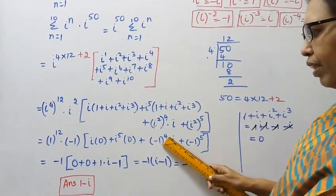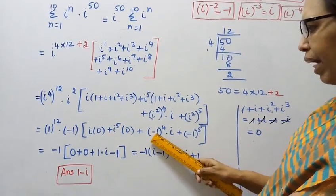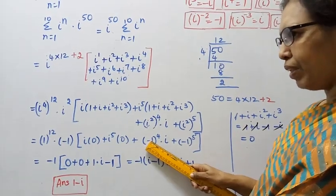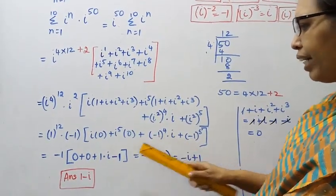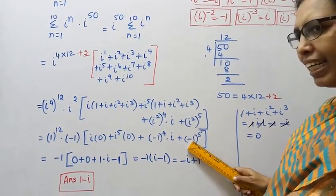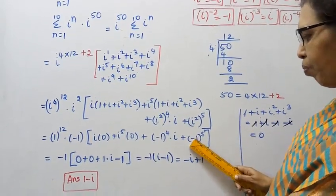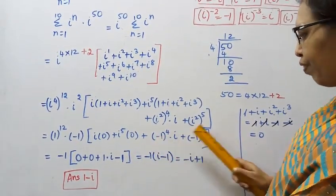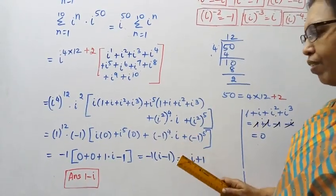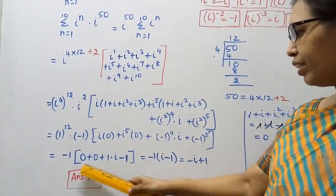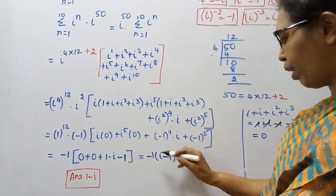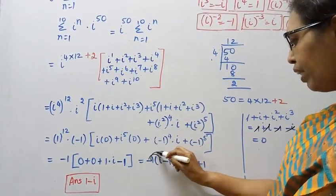When the power is even and inside the bracket is negative, the result is positive. So minus 1 the whole power 4 equals positive 1. Plus 1 into i equals i. Minus 1 the whole power 5: when the power is odd, a negative value stays negative. So minus 1 the whole power 5 equals minus 1. 0 plus 0, then 1 into i is i, and minus 1 gives i minus 1.